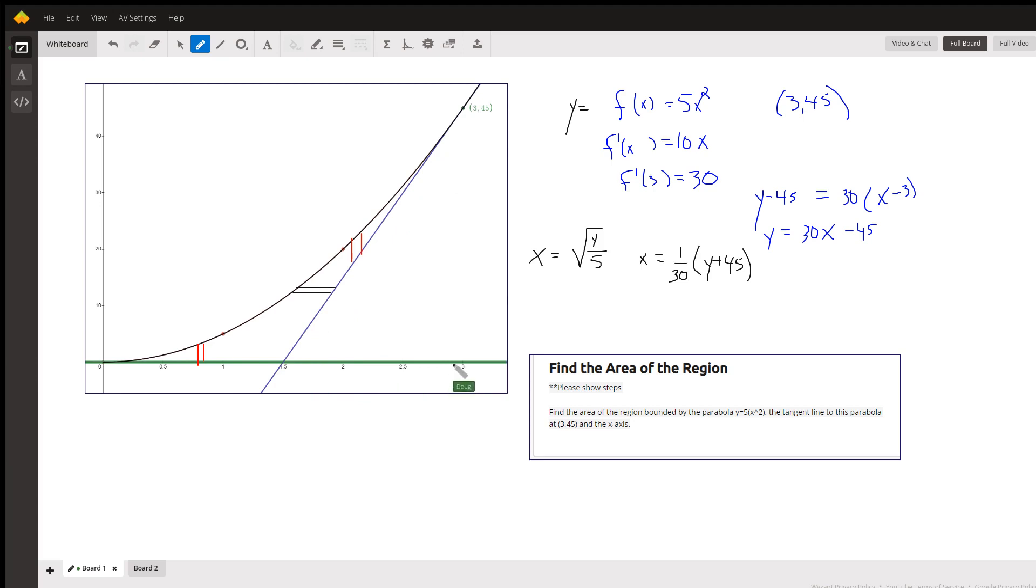There's two ways to do the problem, but the first thing we have to do is find the equation of the tangent line. Here's f prime. Here's f prime of 3, which is the slope of the tangent line. We can confirm that (3,45) does indeed lie on the parabola, and using point-slope, we can get the equation of the tangent line right here.